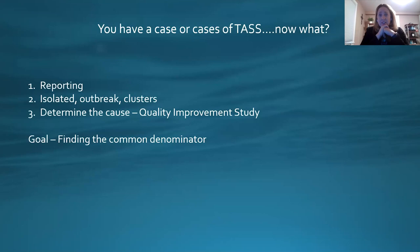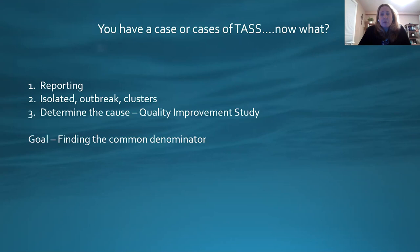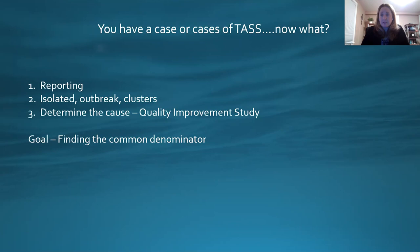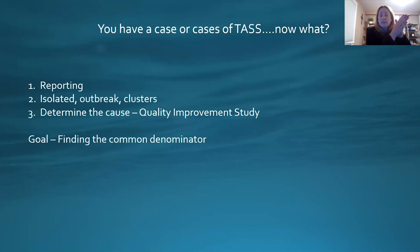Now you have a case or cases of TASS — what do you do? Let's talk about an outbreak. All of a sudden you have three, four, five cases that come in on post-op day one and they all have TASS. The first thing you need to do is determine the cause so you can stop this. There is a possibility that if you've got that big a cluster of TASS — that many patients — you may need to close your OR until you find out the cause. You certainly don't want to continue patient care if you don't know what's causing it. When you're getting six, seven, ten cases of TASS within a day, something is clearly wrong and you need to do a quality improvement study. Your goal is to find the common denominator — that one thing that every case has.